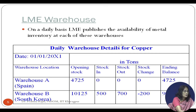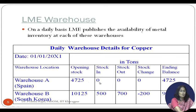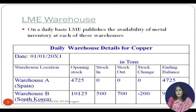For example, as a daily warehouse detail for copper: warehouse B had 10,125 tons of copper as opening stock, stock in of 500, stock out of 700, a net change of minus 200, and the corresponding ending balance. When this information is made available to all participants, they can understand supply and demand for a particular metal commodity at a given point in time, helping them make pricing decisions.